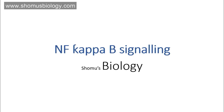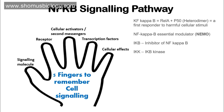So let's talk about the NF-kappa B signaling from the beginning. The easiest way to remember the NF-kappa B pathway is through what I call the five-finger concept of NF-kappa B signaling, in which we talk about five important parameters of every single cell signaling pathway.